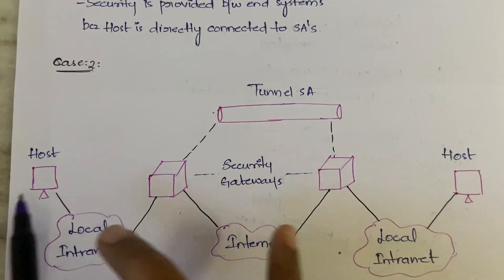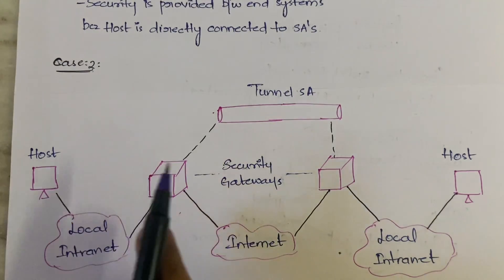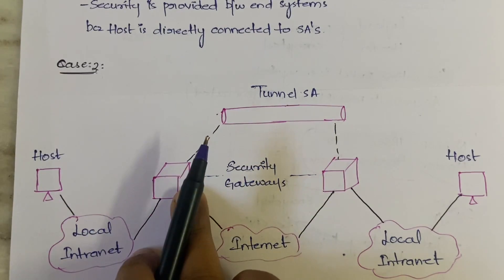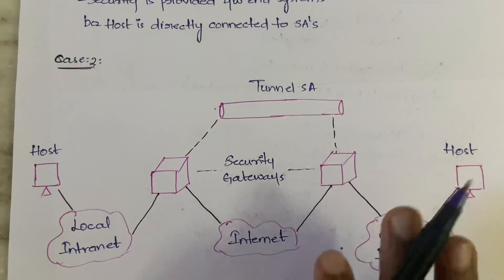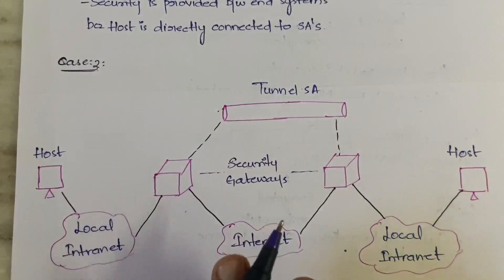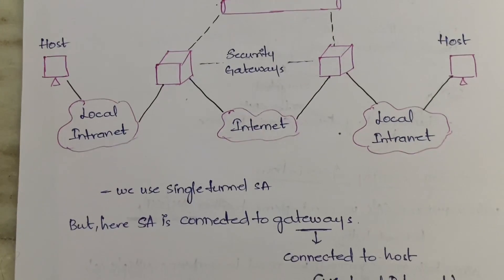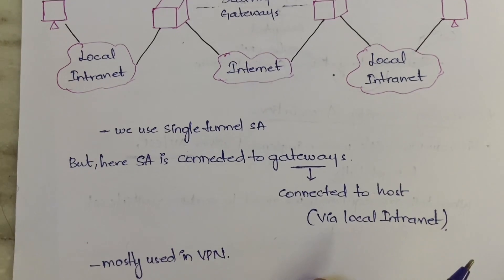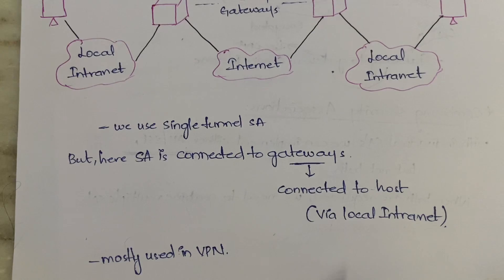In case two, security is provided to the security gateways, and from there these gateways send security to the host. Instead of a router, the local intranet is connected to the security gateway. So security is not directly provided to the host — it is provided indirectly with the help of the security gateways. This case is mostly used in VPNs — virtual private networks.